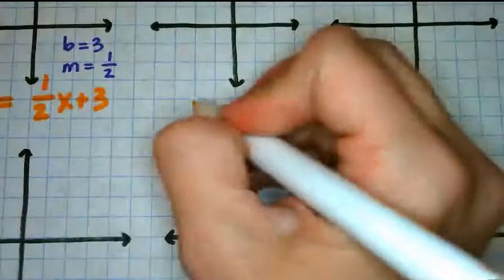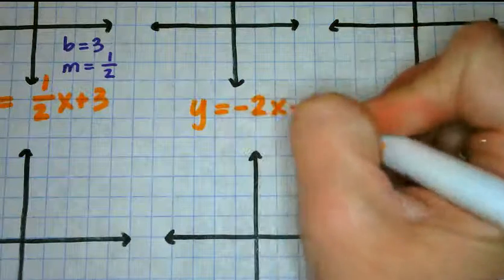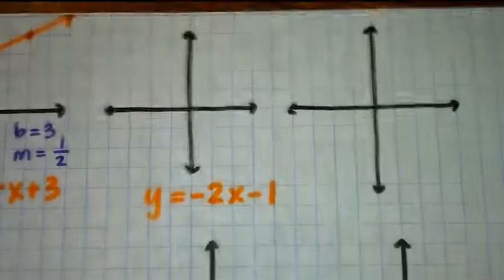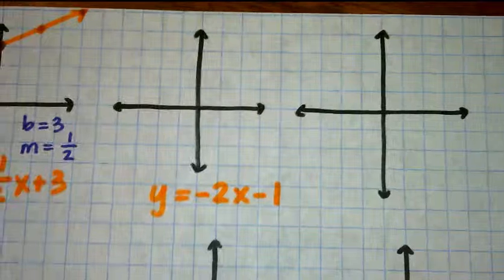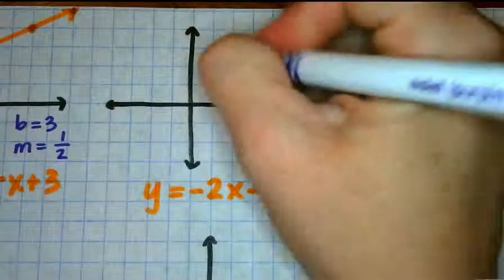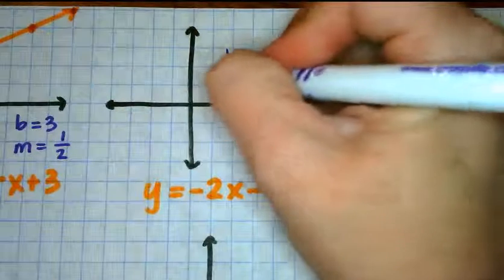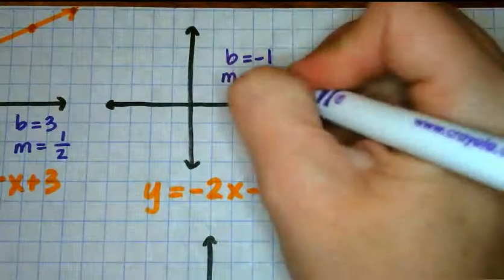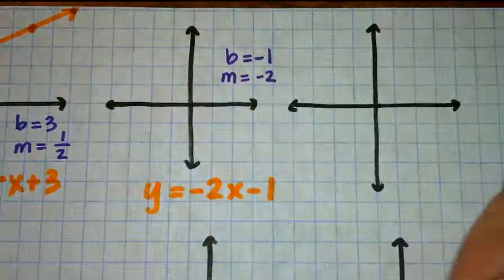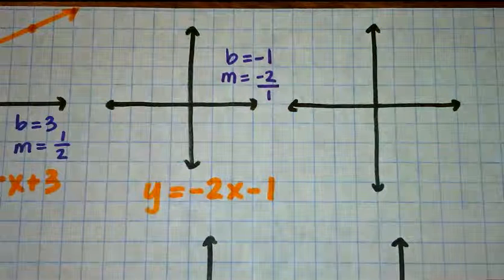If we had the equation y equals negative 2x minus 1, I'm going to once again start by naming my b and my m. For this problem, the b is negative 1 and the slope, the m, is negative 2. Since we usually refer to slope as being rise over run, I'm going to put that as 2 over 1.